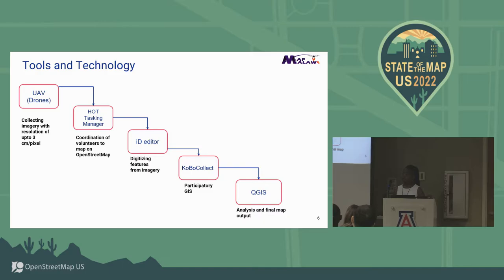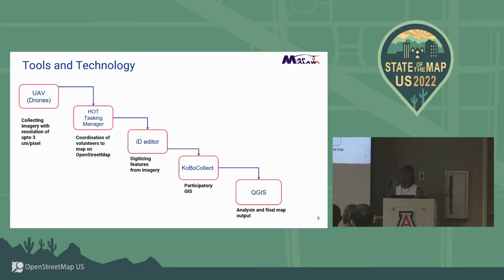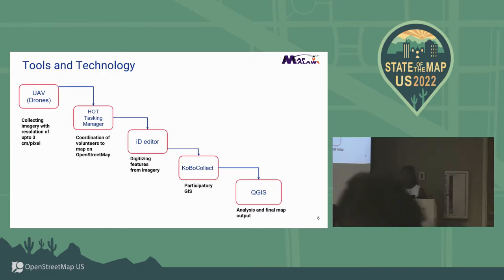These are the tools and technology we used, which also reflects our timeline. We started by collecting drone imagery. Because the area is so congested, low-resolution imagery wouldn't effectively map it. We contacted relevant authorities to get access to fly the area, then collected the drone imagery. We created a task on the Tasking Manager — some of you here actually helped us map it. For coordinated mapping we mainly used iD Editor, though experienced mappers came in with JOSM. KoboCollect was used for participatory GIS, and QGIS was used for final analysis and map output.